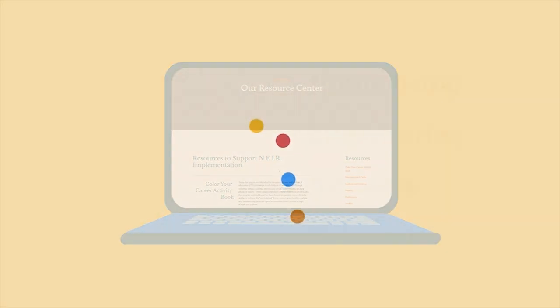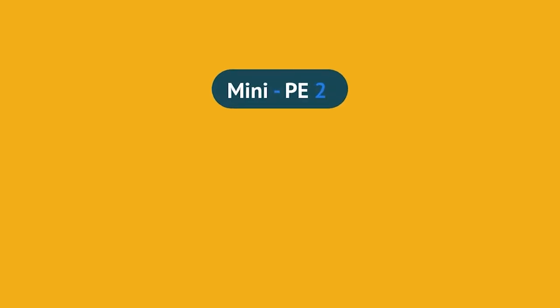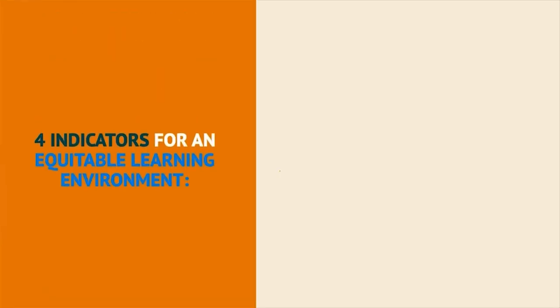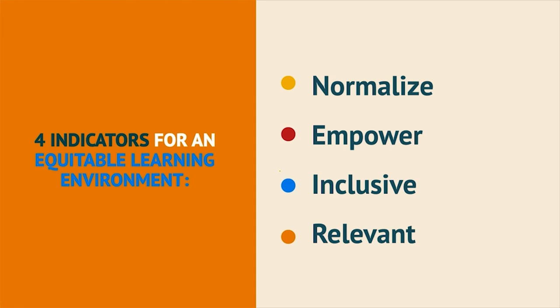You may recall that the NEAR model stands for Normalize, Empower, Inclusive, and Relevant. In Mini-PE 2, we introduced Normalizing. The goal of this third Mini-PE is to deepen your knowledge of the second of the four indicators that are experienced by the students and teachers in an equitable learning environment: Empower.